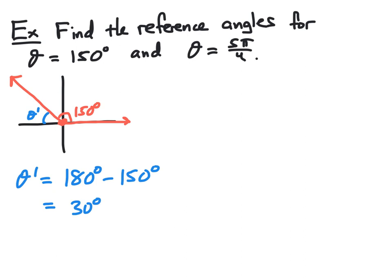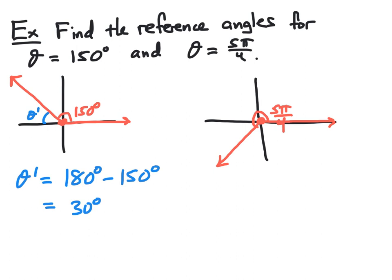Now, let's look at the angle given by 5 pi over 4 radians. Again, the first step is to determine which quadrant this angle is in. In this case, 5 pi over 4 is a little bit bigger than pi, which would be 4 pi over 4, but not quite 3 pi over 2. And so 5 pi over 4 radians would be somewhere here in the third quadrant. In the third quadrant, our reference angle is formed with the negative x-axis. In order to find the value of that angle, we take the entire 5 pi over 4 angle and subtract the half rotation, which would be pi radians. So we have 5 pi over 4 minus pi, and the result is pi over 4. The reference angle for 5 pi over 4 is pi over 4.